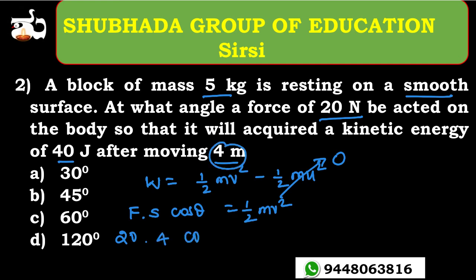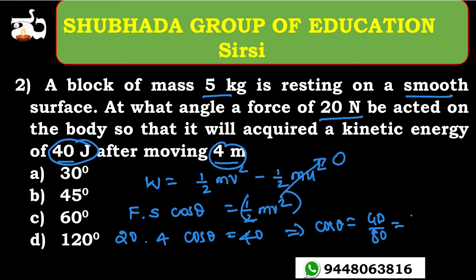So we have: 20 × 4 × cos θ = 40 joules. This gives cos θ = 40 divided by 80, which equals one-half. Therefore θ = 60 degrees, since cos 60° = 1/2. So the answer is option C, θ = 60 degrees.